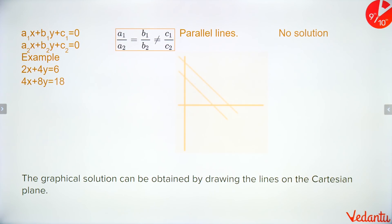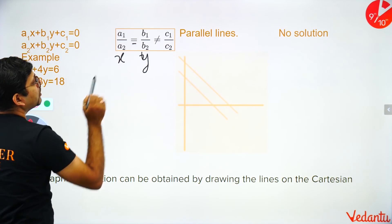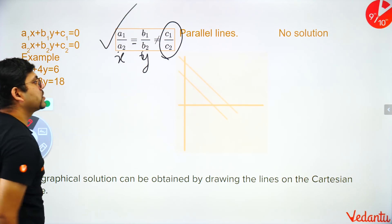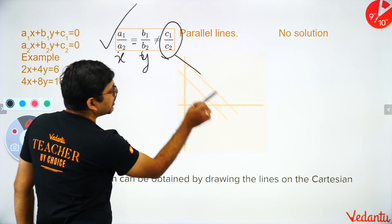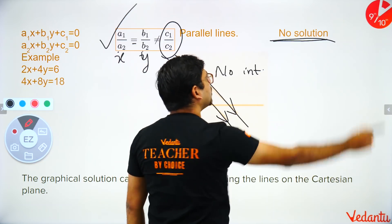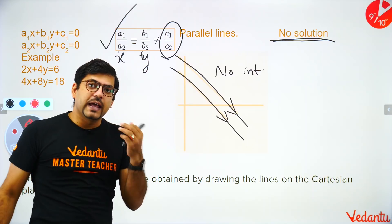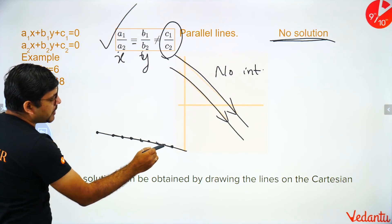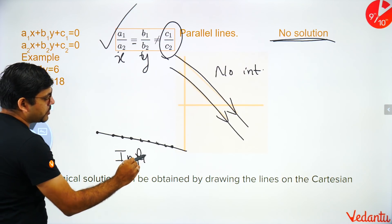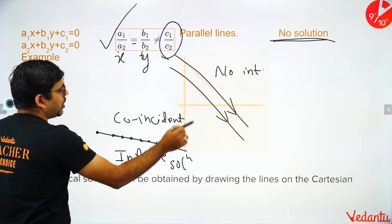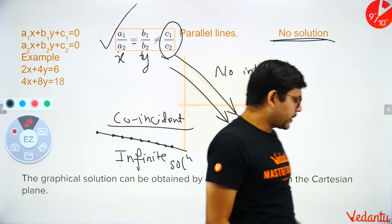The third condition is for parallel lines: a1/a2 = b1/b2 ≠ c1/c2. The ratios of x and y coefficients are equal, but the constant ratio is not equal. Parallel lines never intersect, so there is no solution. To recap: coincident lines give infinite solutions, parallel lines give no solution, and intersecting lines give a unique solution.